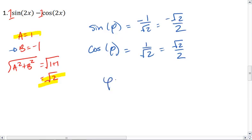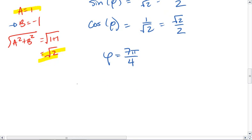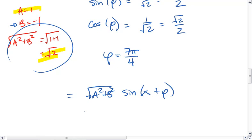Thus, phi is 7 pi over 4. We can now plug this all into our equation. We get this value here, our square root of a squared plus b squared times sine of x plus phi. We get root 2 sine x plus 7 pi over 4.